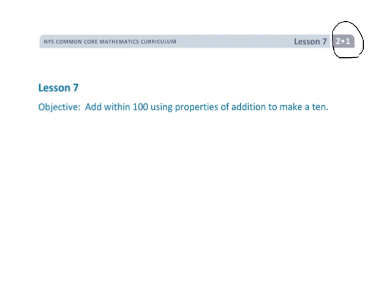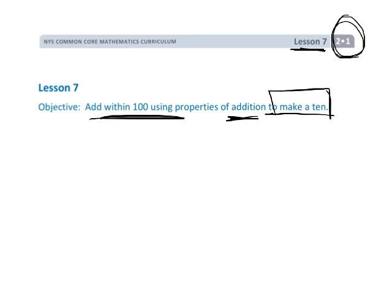This is the Grade 2 Module 1 Lesson 7 video. We're going to be adding within a hundred using addition by making tens, and we're going to be decomposing our numbers. For example, if we're doing 56 plus 7, we're going to decompose 56 to 50 plus 6.